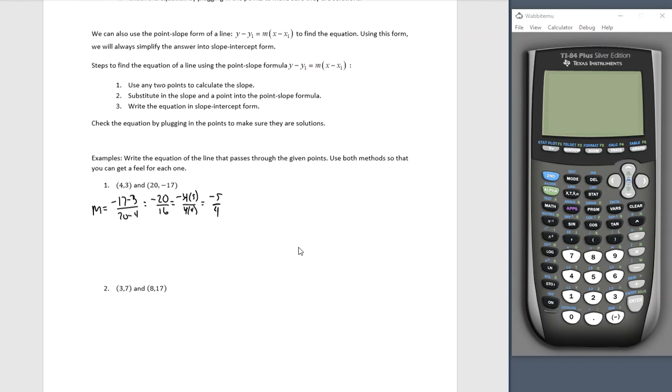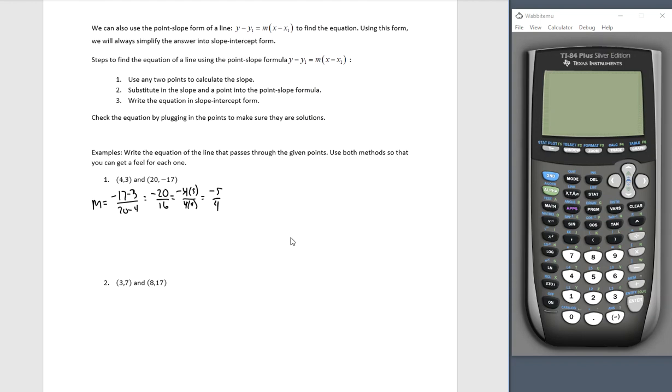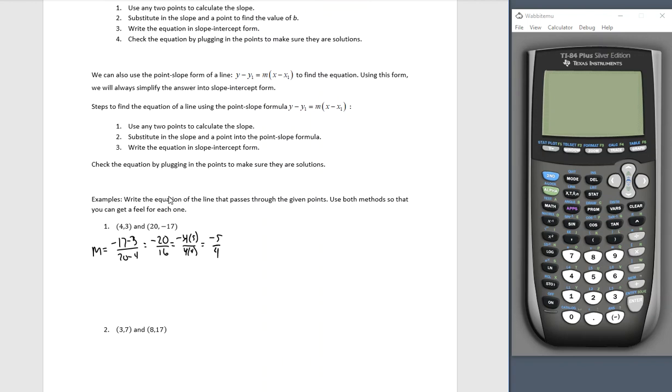Remember in order to simplify, we would have to factor something out. So I could cancel these fours and I'm left with negative five fourths for my slope. Always simplify your slope as far as you can by reducing, by canceling. Always you have to be able to factor it out in order to cancel. That's step one, done.